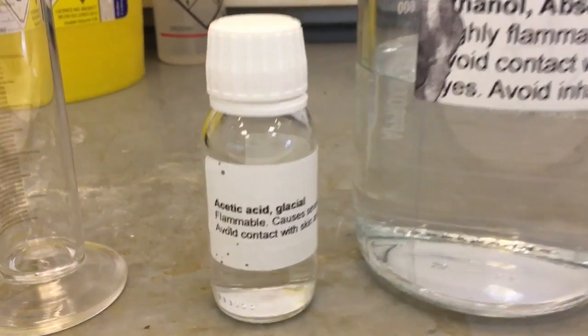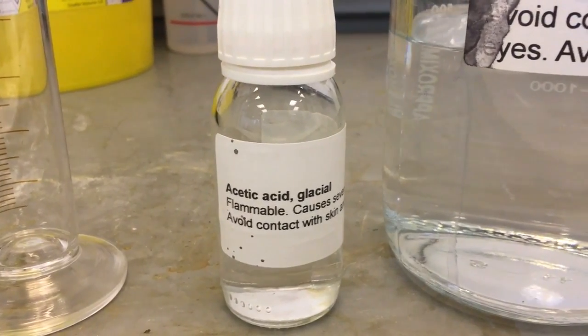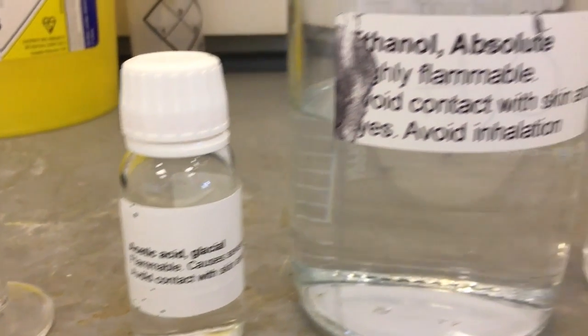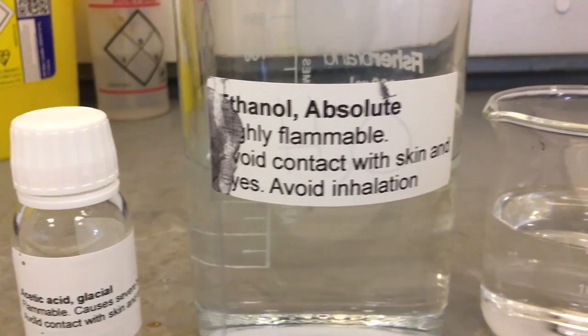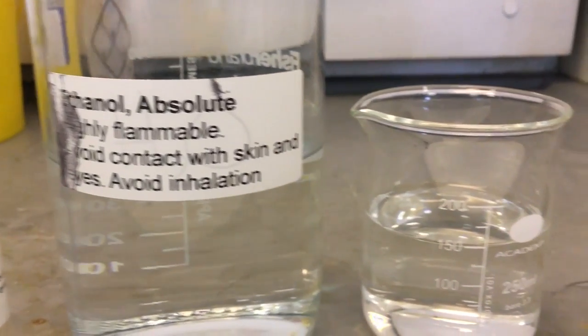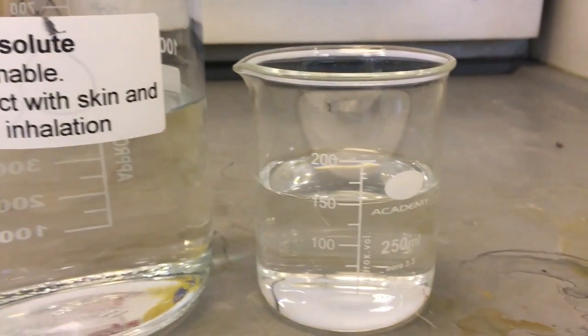The first thing we did was create an extraction solution, which consisted of acetic acid, ethanol, and deionized water. This will be used to extract the antioxidants from our smoothie samples.